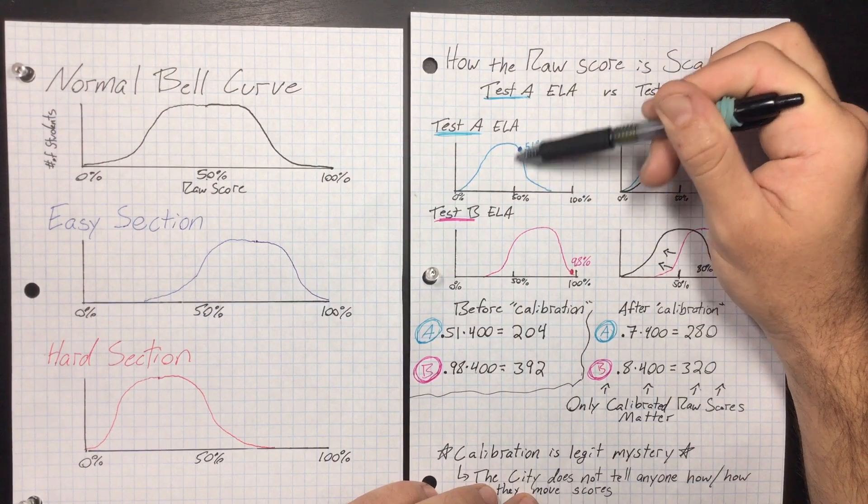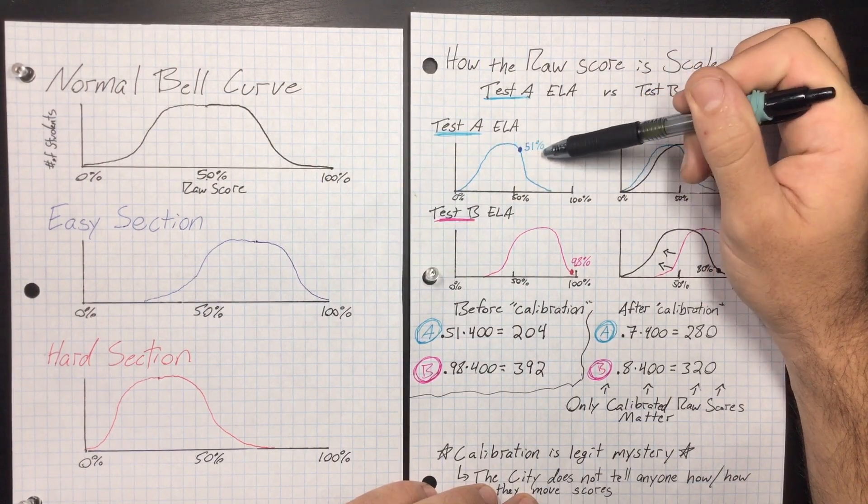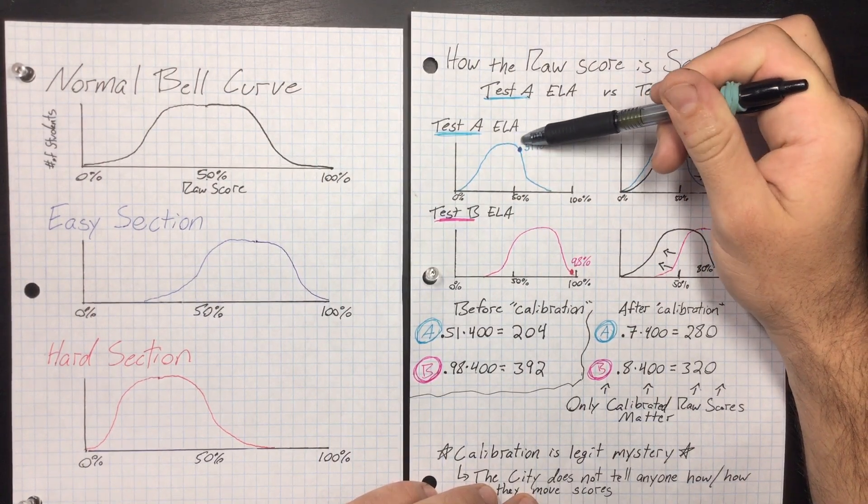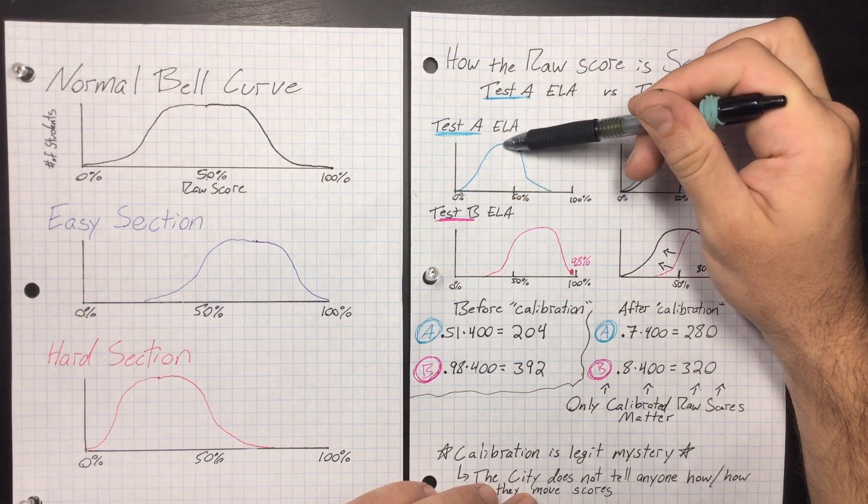Most of the kids got about a 50%, a 40%, 30%. But you've been studying and you got a 51%, which isn't great, really. But compared to the rest of your classmates in the section, you're better than average because average is about a 45% here.